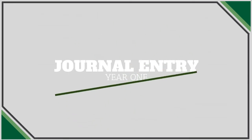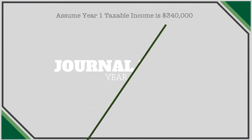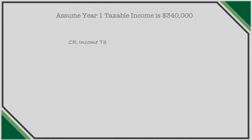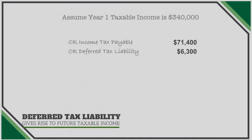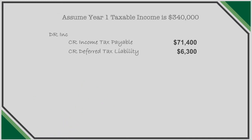Let's journalize this. In year 1, assume we have taxable income of $340,000. We will record a credit to income tax payable for the amount owed to the IRS: $340,000 times 21% gets us $71,400. Our deferred tax liability computed by comparing our book and tax basis balance sheet is $6,300. Recall, we are recording this as a deferred tax liability — not a deferred tax asset — since the difference will give rise to future taxable income. Finally, income tax expense is plugged to record total tax on book income accounting for our differences. This plug is a debit to income tax expense of $77,700.